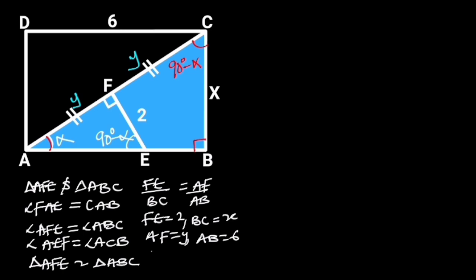Substituting these values in the above equation will give us 2 over X is equal to Y over 6. By cross multiplication, we will have X times Y is equal to 2 times 6, which will give us XY is equal to 12. Dividing through by X will leave us with Y is equal to 12 over X.